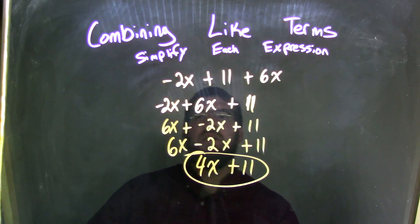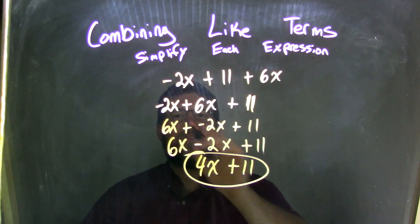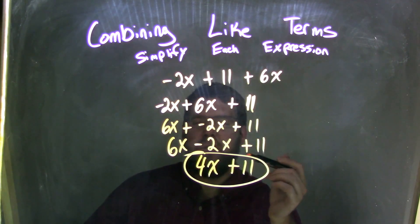So, let's recap. Negative 2x plus 11 plus 6x, I rearrange using the commutative property, our like terms. I put the 6x next to the negative 2x, and I brought the plus 11 to the right.